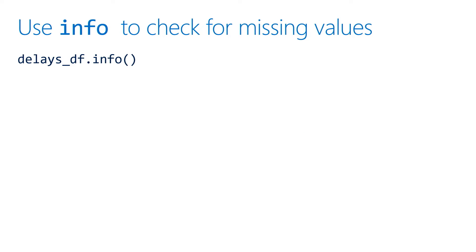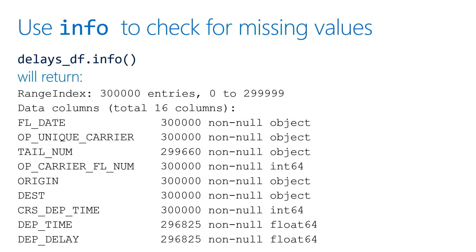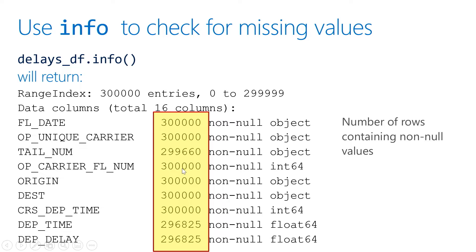So one of the things we need is a way of knowing if a particular data frame has missing values. The info method of the data frame is fantastic for this. It will tell you all sorts of great information — how many rows are in your data frame, and then for each of the columns, how many of the rows contain values that are not null. You can see here that flight date has all 300,000 rows containing non-null values, and the same for unique carrier.